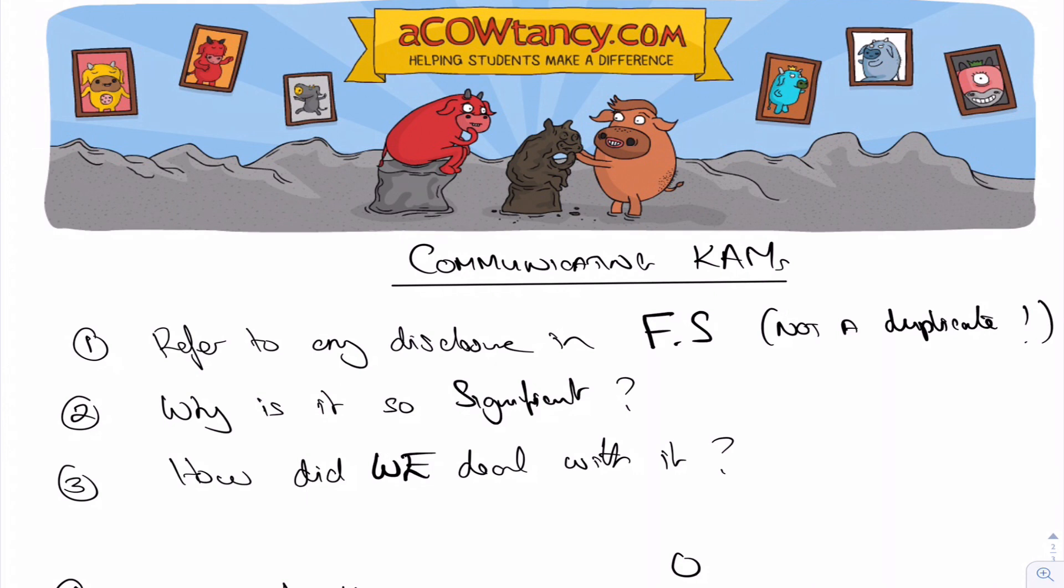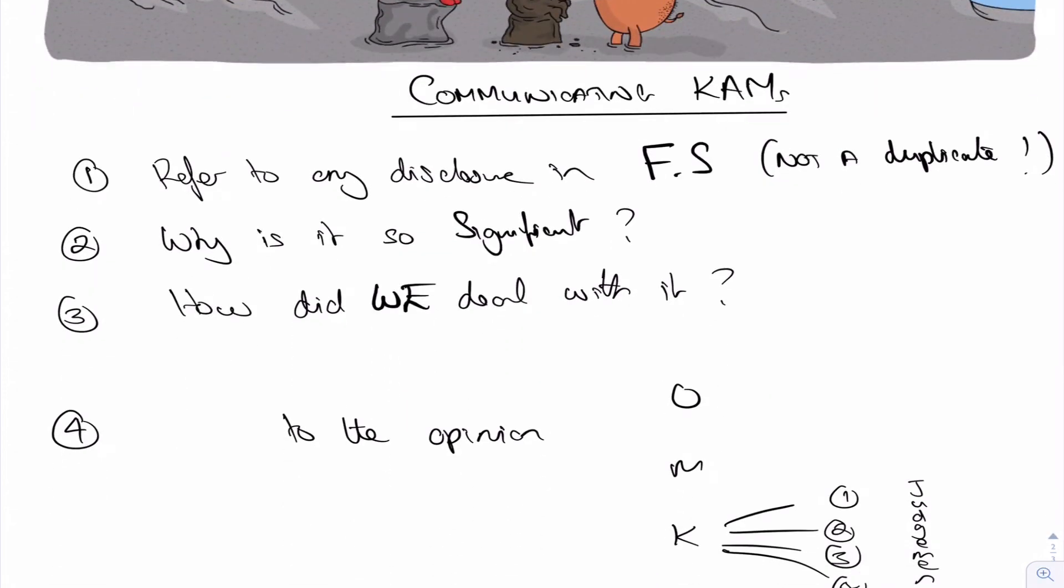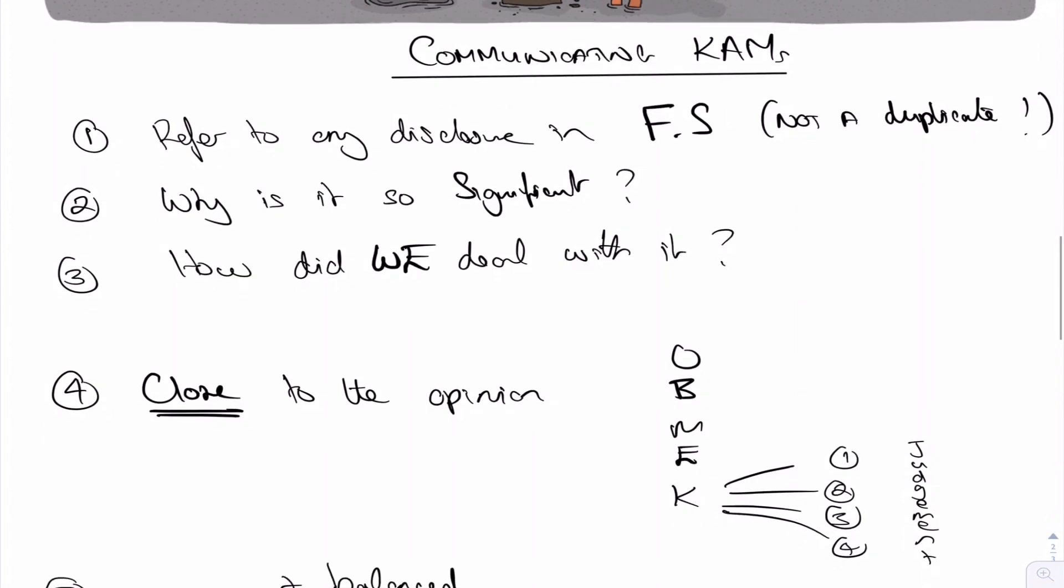Where does this paragraph go? Where does this key audit matter go? It goes close to the opinion. Those of you who follow my classrooms will know that I use this: Only bad materials, bad notes and things. Emphasize knowledge only. So you've got opinion, basis of opinion, material uncertainty ongoing concern, emphasis of matter just not so important now, and then key audit matters and then other matters. But what we're saying is this key audit matters could jump up to there, probably jump up to there, depending on whether there is a material uncertainty ongoing concern.